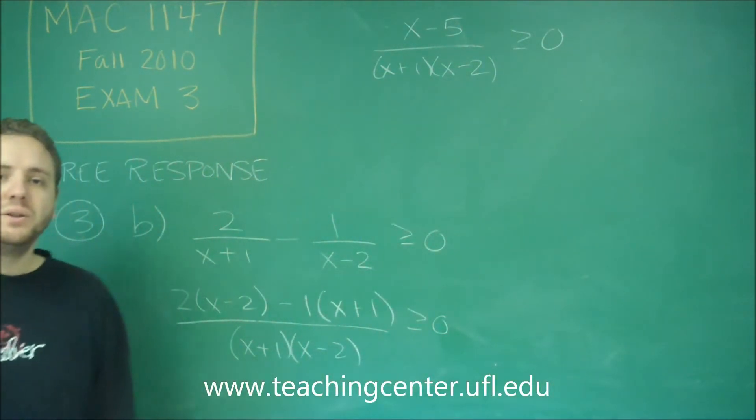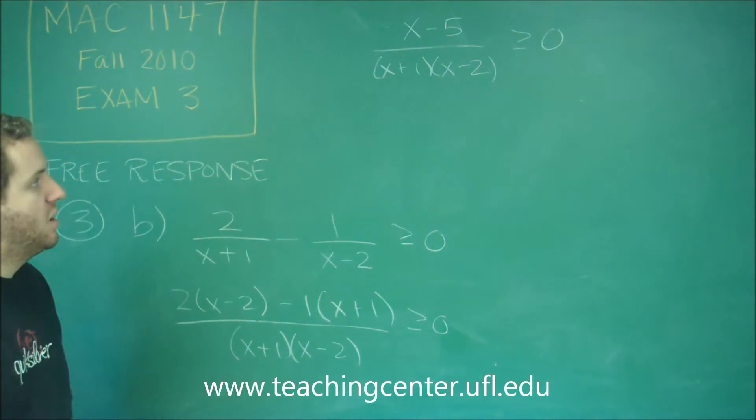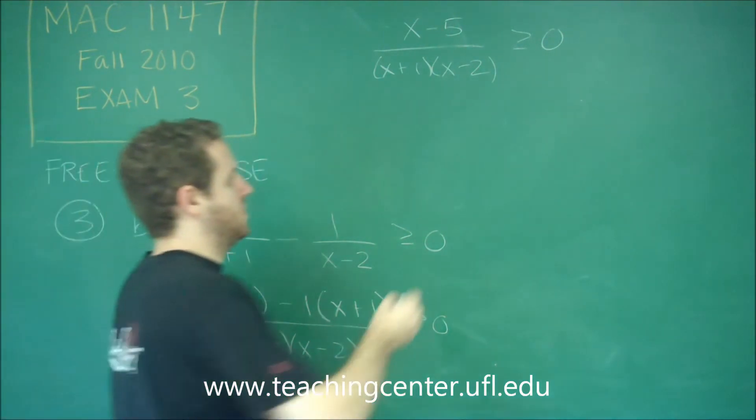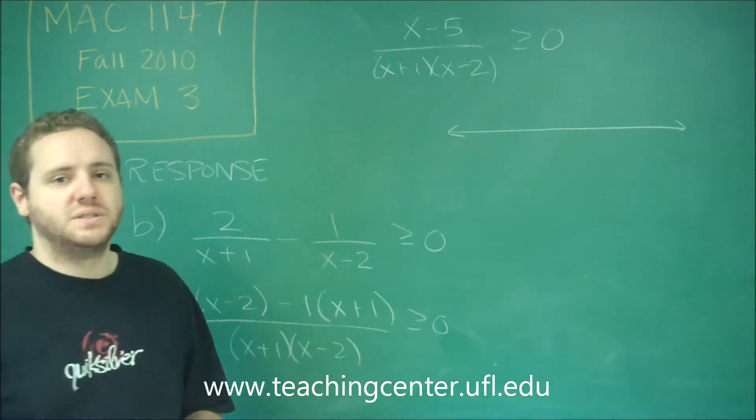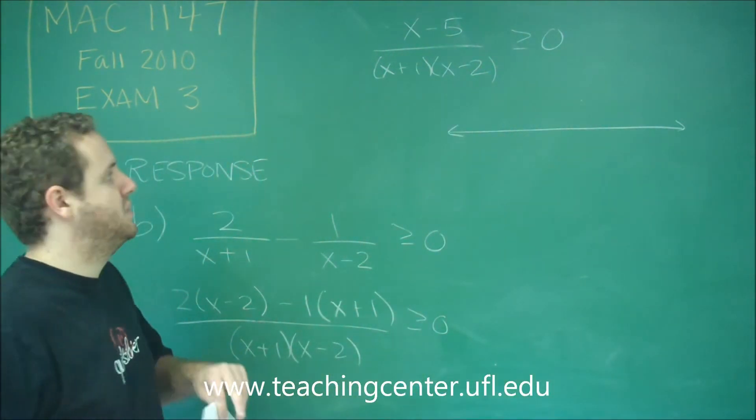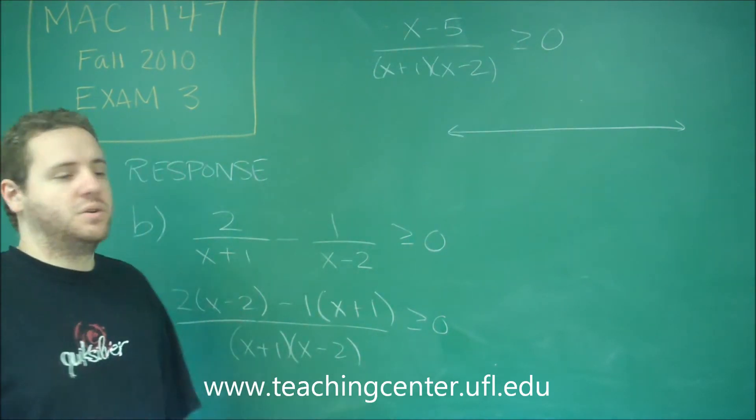So this is now fully factored, fully simplified. Now we are ready to actually solve the problem. What you do here is always you go to the number line. Let's think about what possible zeros or undefined places we have. We want any of these terms to be zero and that number needs to go in our number line.